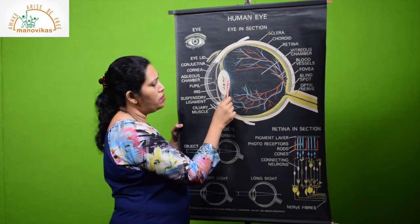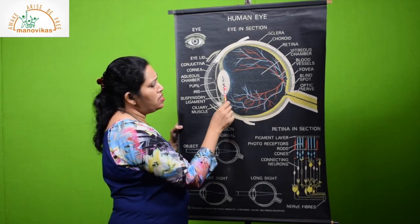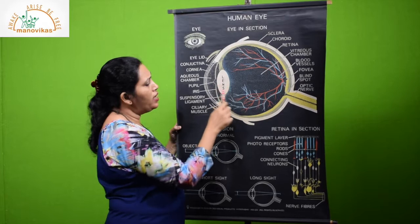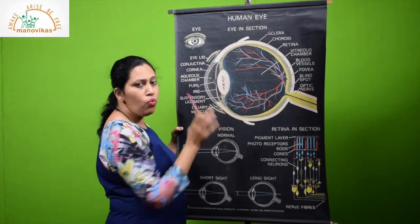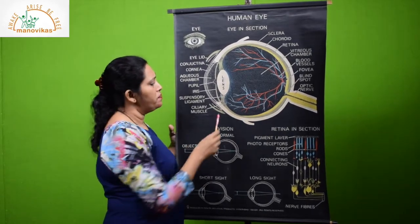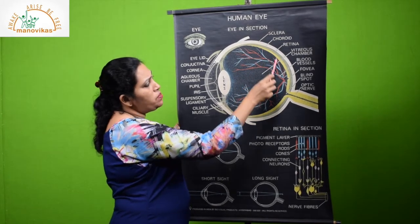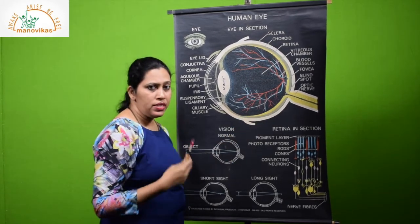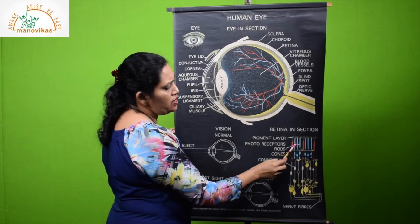When the light enters, it falls on the lens, which is convex. This lens will further direct the image or the light to the retina. This lens is always held in place by suspensory ligaments. It will not move. It will only adjust to see far or near. The innermost layer is the retina, which is made up of the photoreceptor cells called the rods and the cones.